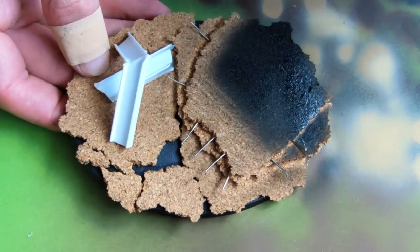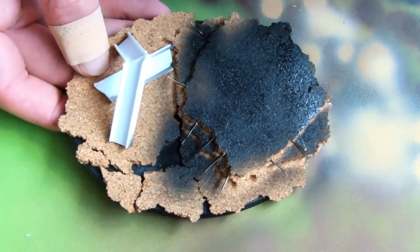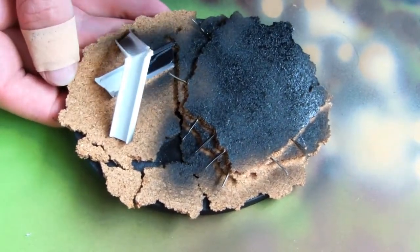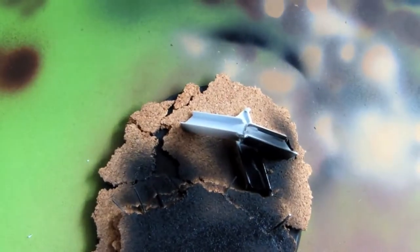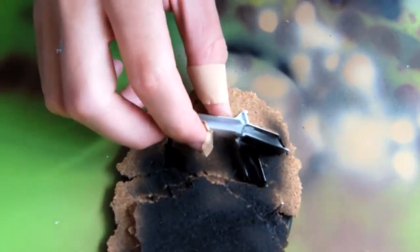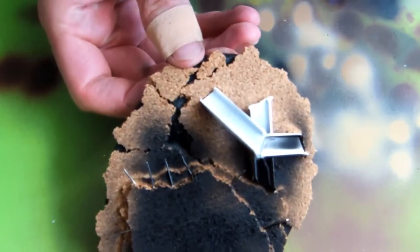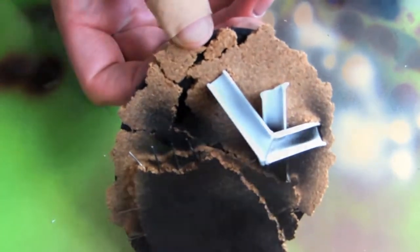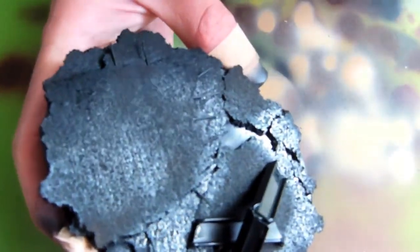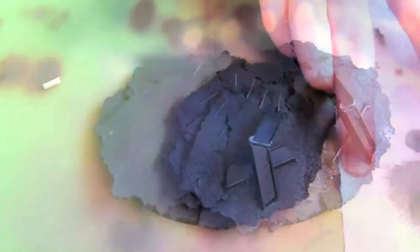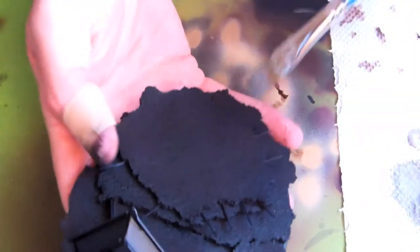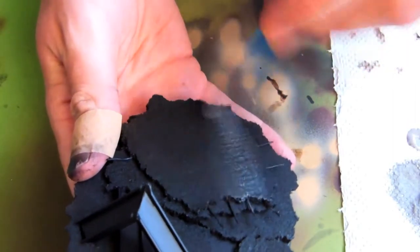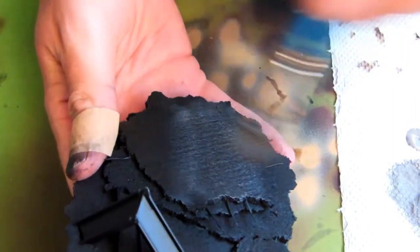I then primed the base with Vallejo black primer. The next step was dry brushing the pieces of concrete with Cold Grey from Vallejo Game Color.